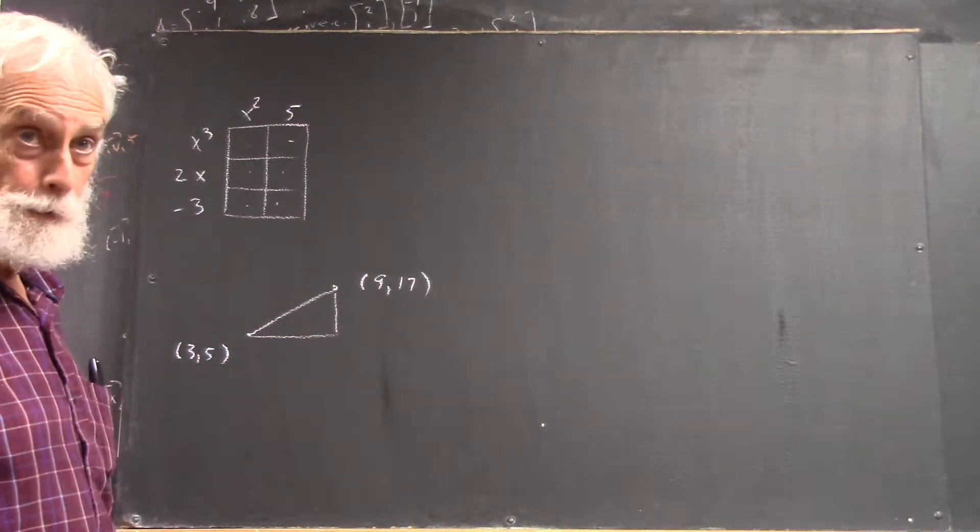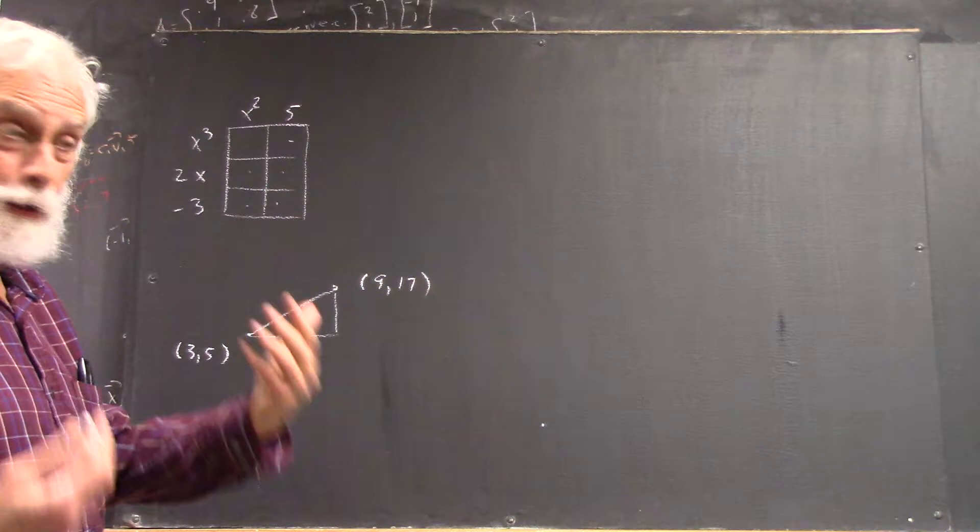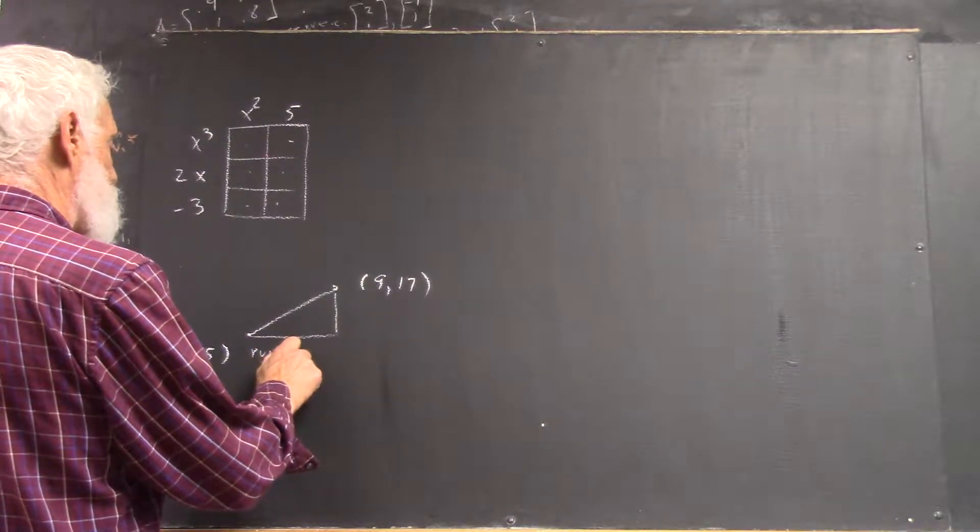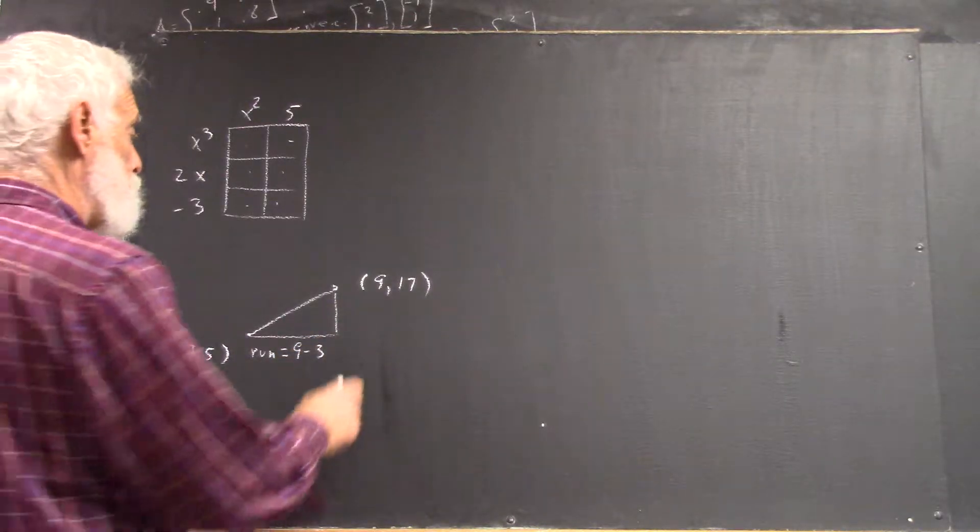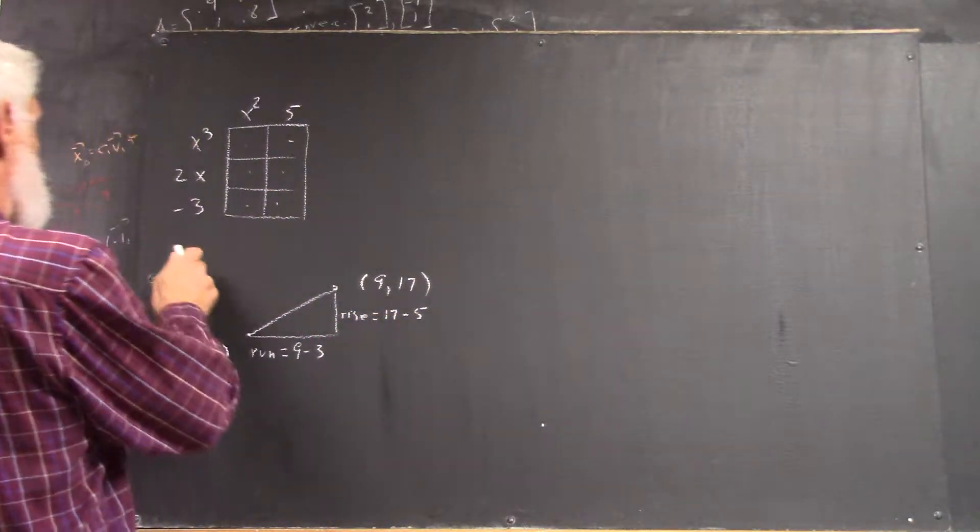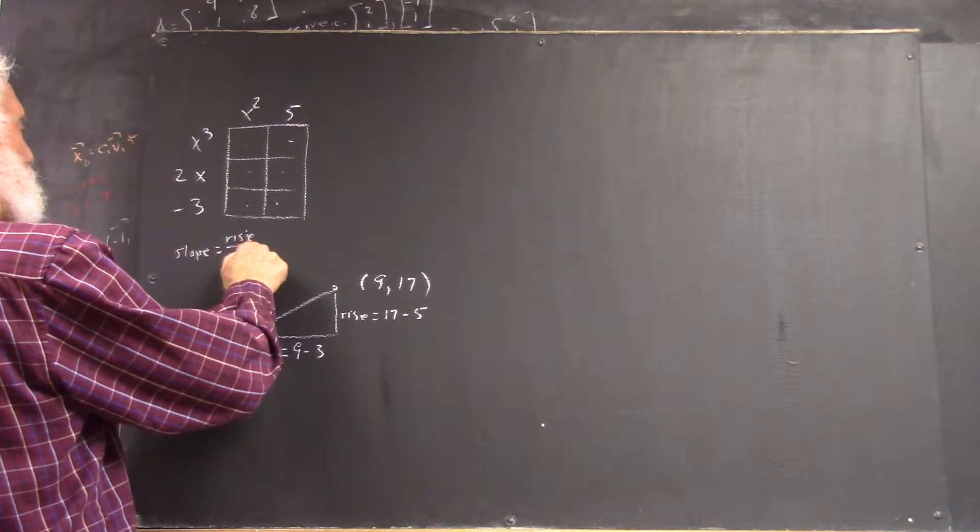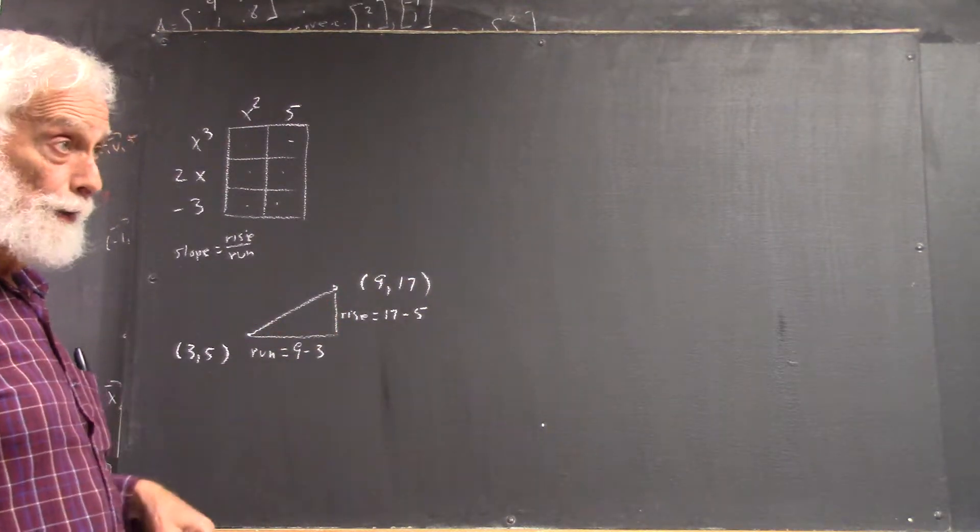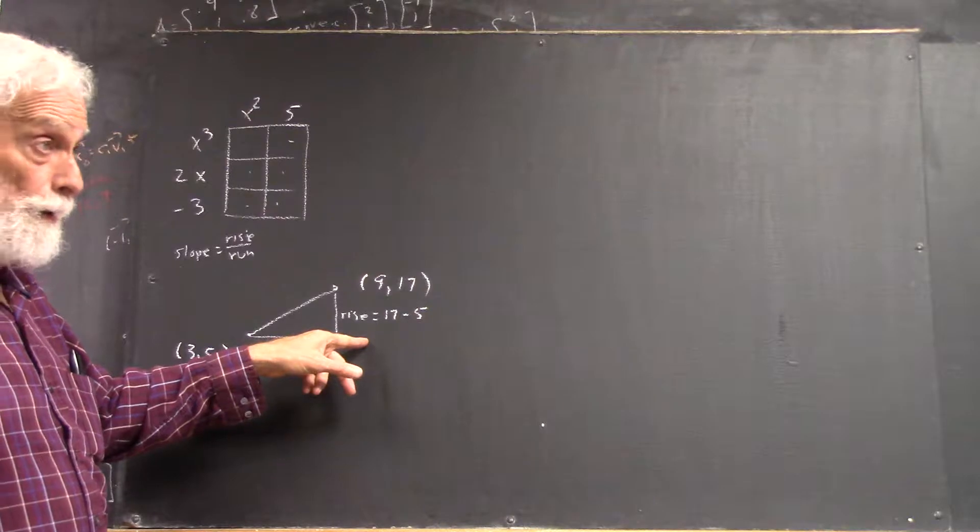So, when you do the fundamental triangle, to avoid screwing up, like reversing rise and run, which is real easy to do. You've probably seen me do it. Get careless. You write run equals nine minus three. And you write rise equals 17 minus five. And then up here, maybe, just to be safe, you write slope equals rise over run, because you know this very well. Everybody knows slope is rise over run. So, you're not going to mess it up if you know that that's the run and this is the rise. Now, if you don't write these down, it's very easy to get the rise and run backwards. And you want to guard against that.